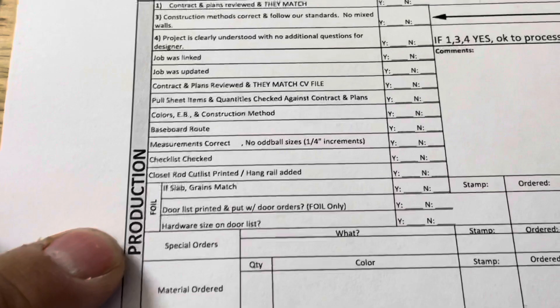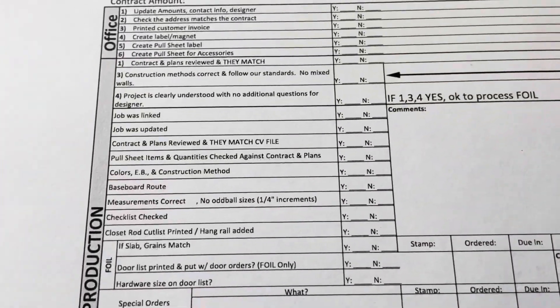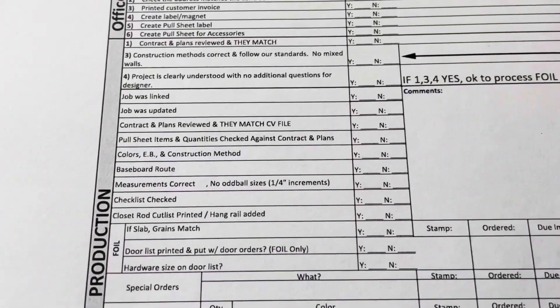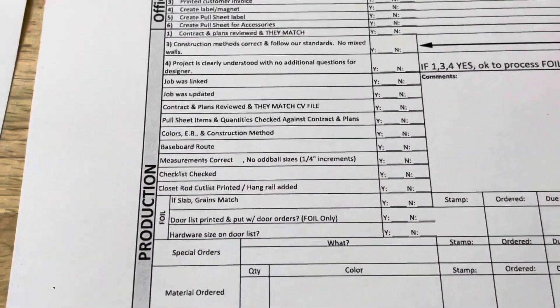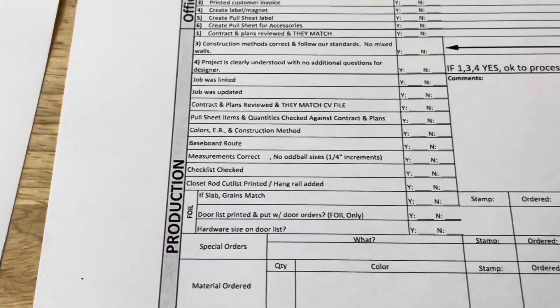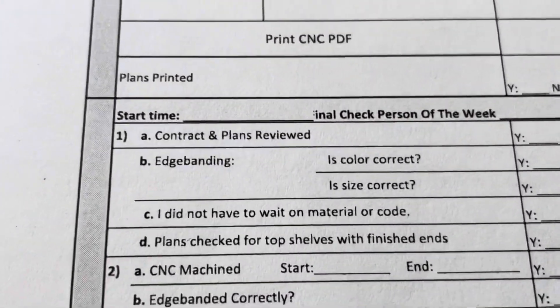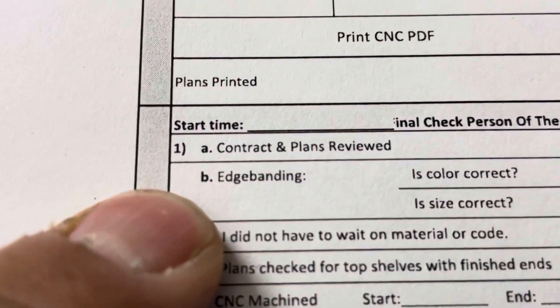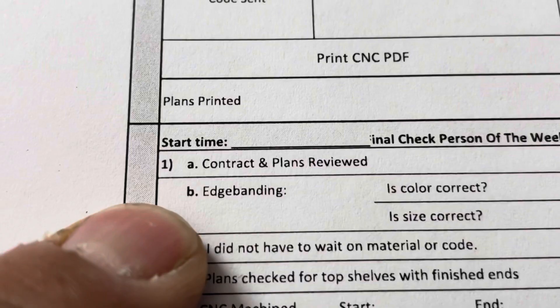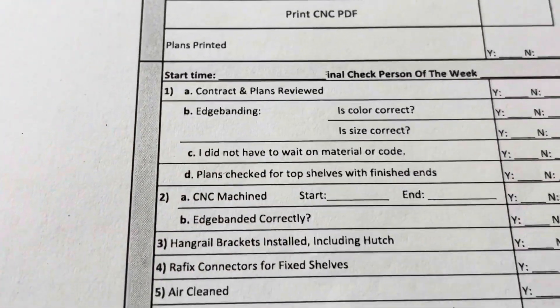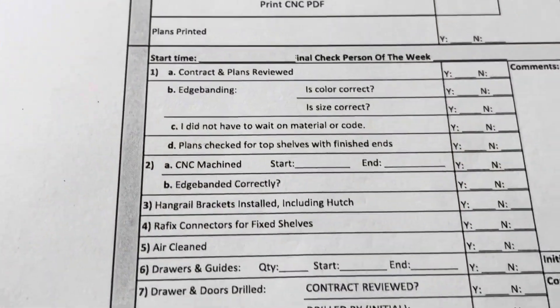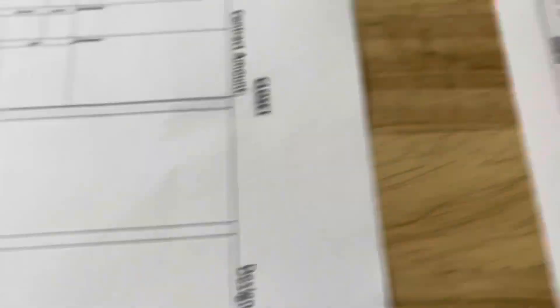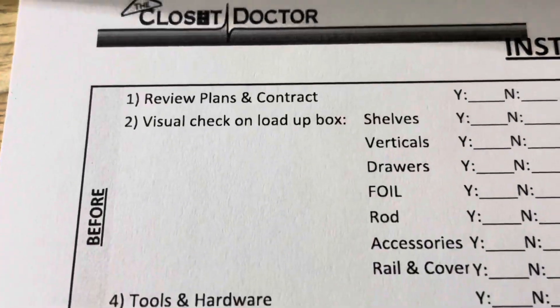I came up with this because I would do this and forget to check these things — that's why we created the checklist. You can't do things over and over again from memory. On the shop side, it has everything as well. At the top of each section it says the contract and plans are reviewed before they start anything else. We have the same thing for installations.